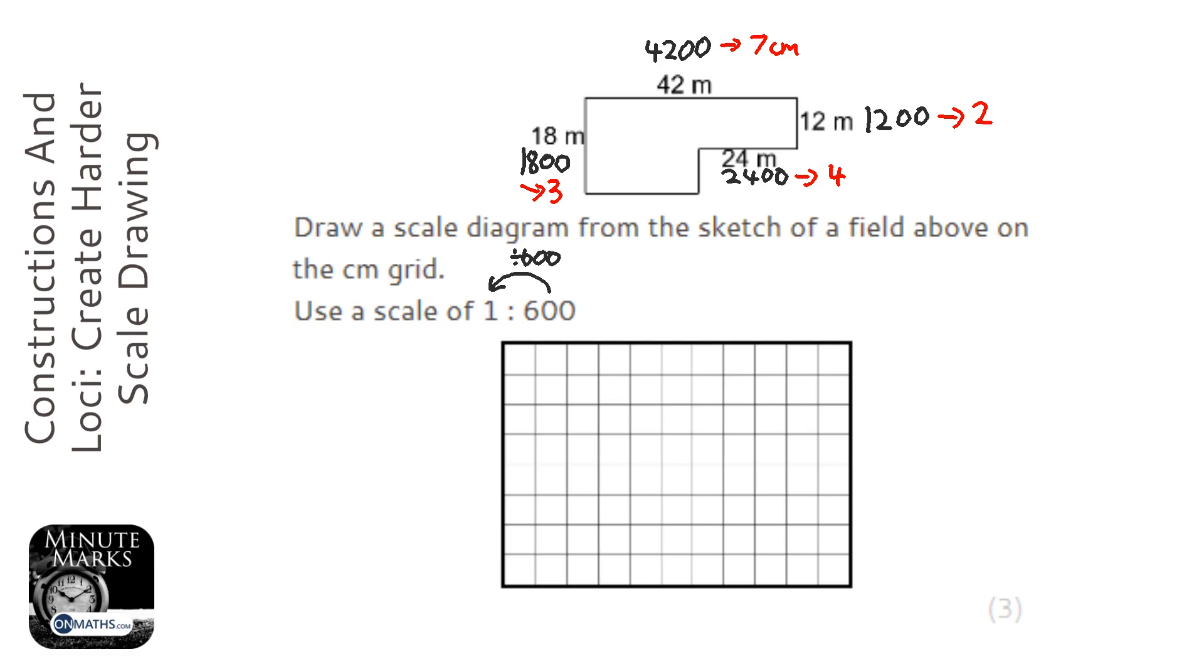Okay, so let's start drawing that on our centimeter grid. Now, when it says it's a centimeter grid, it means each one of the squares is 1 centimeter. So I'm going to start off at the top left, and I'm going to go down 3 squares.